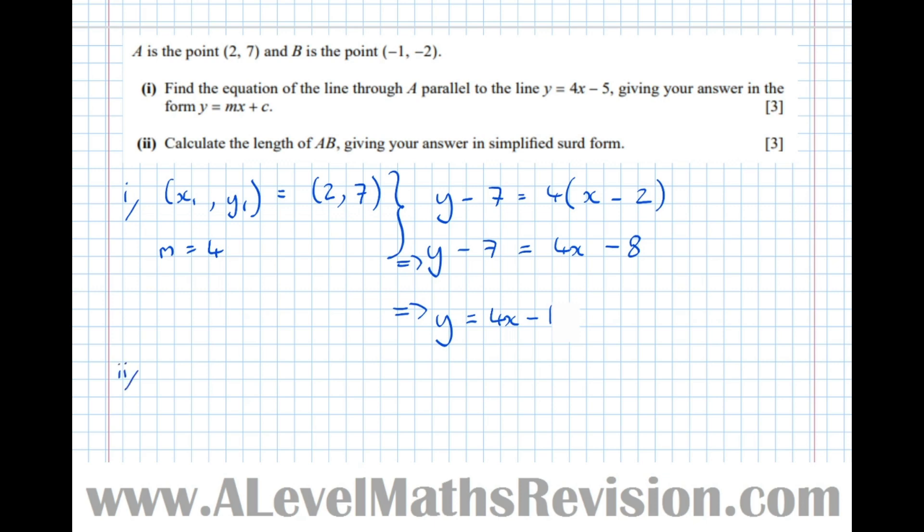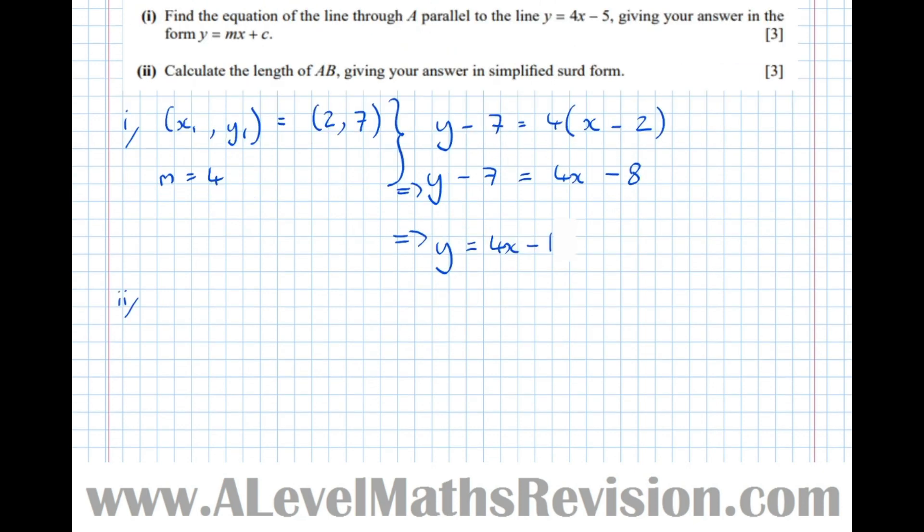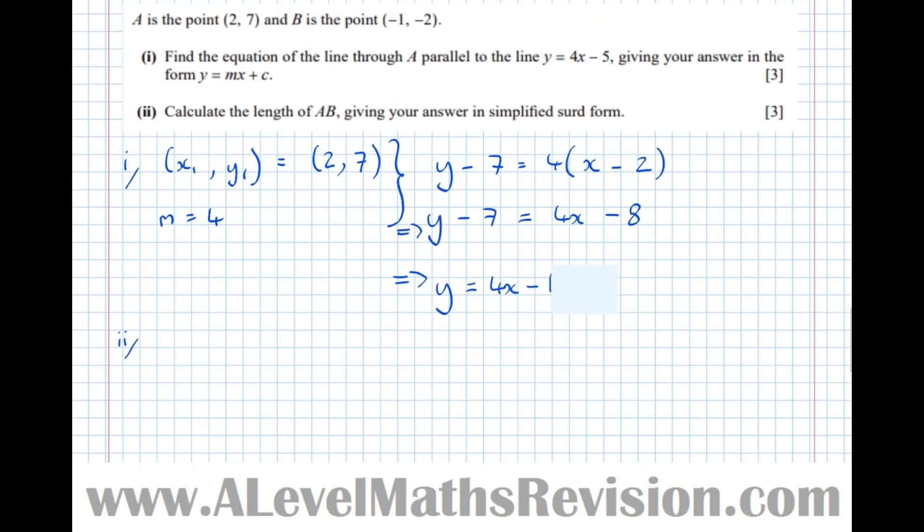Part 2: Calculate the length of AB, giving your answer in simplified surd form. This is something on the A-Level syllabus. We can picture it as follows. Let's draw a rough diagram of the two points. We've got B here at minus 1, minus 2, and A is up and right at 2, 7. We can turn this into a right-angled triangle. The x distance from minus 1 up to 2 is 3, and from minus 2 up to 7 is distance 9.